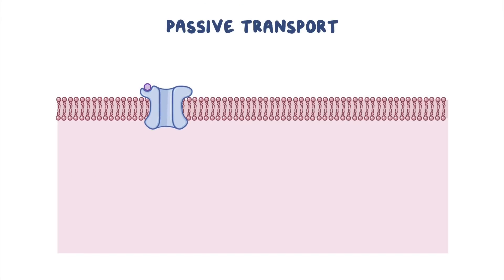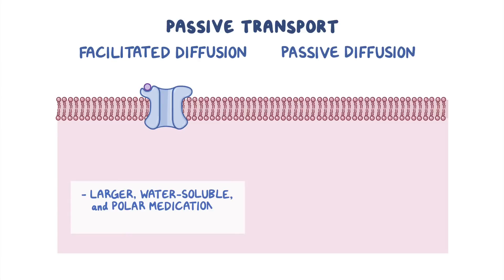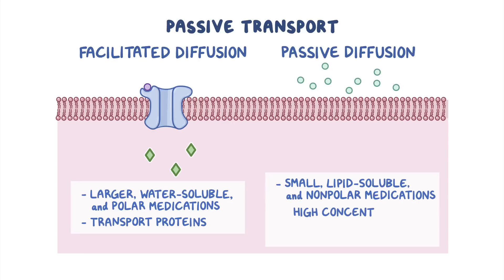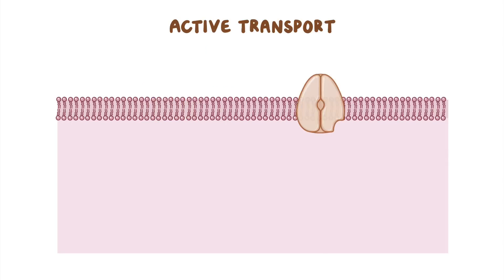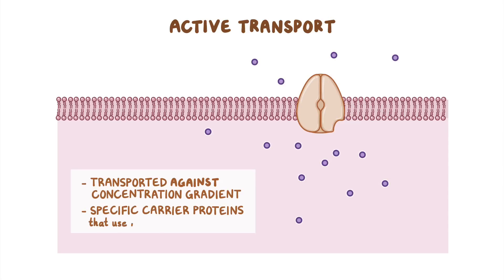Two types of passive transport are used: facilitated diffusion and passive diffusion. Facilitated diffusion helps larger, water-soluble, and polar medications move across the membrane through transport proteins like channels and carrier proteins. Passive diffusion helps small, lipid-soluble, and non-polar medications move across the membrane from an area of high concentration to low concentration. But sometimes active transport is needed, meaning that the medication is transported against their concentration gradient, involving specific carrier proteins that use ATP as a fuel to pump medications into the cell.